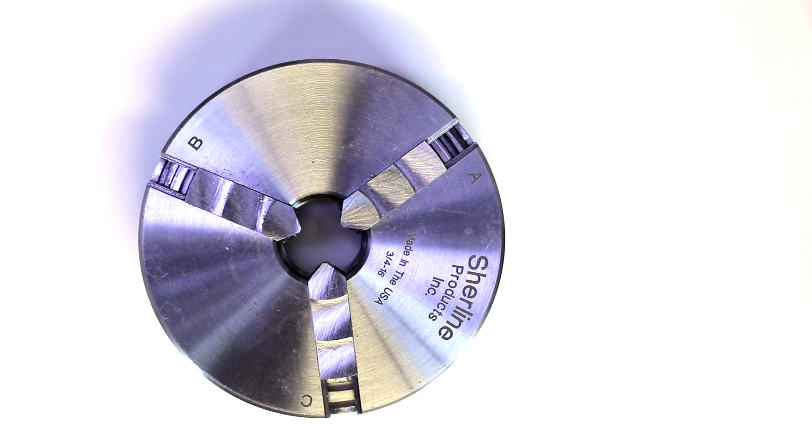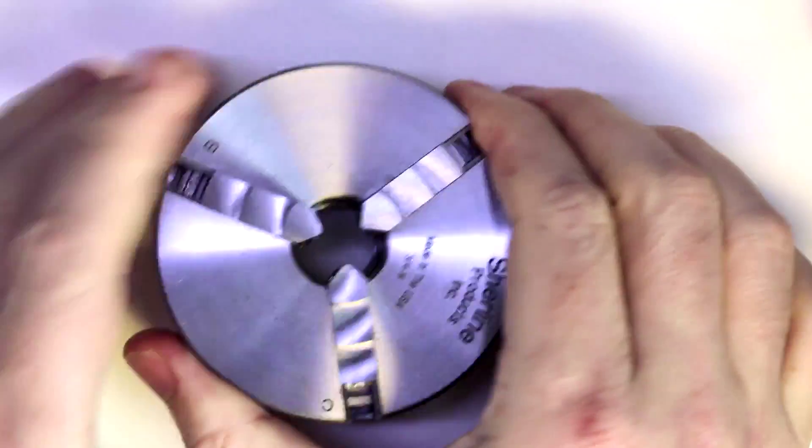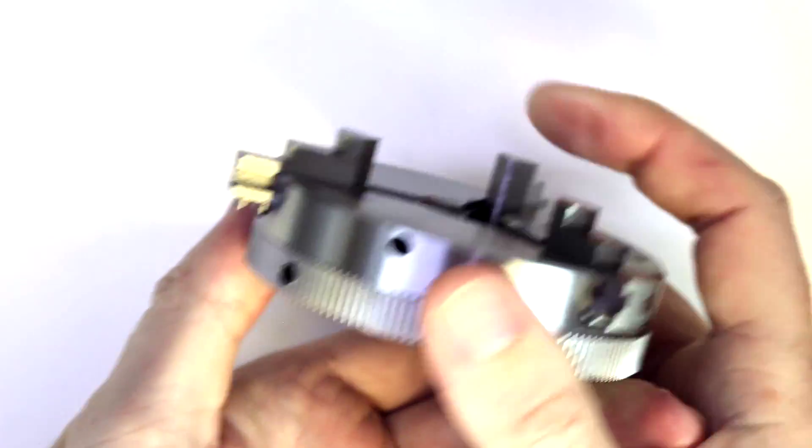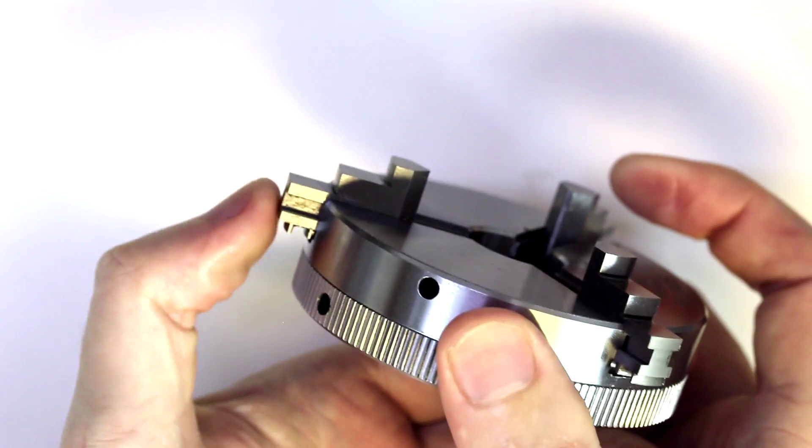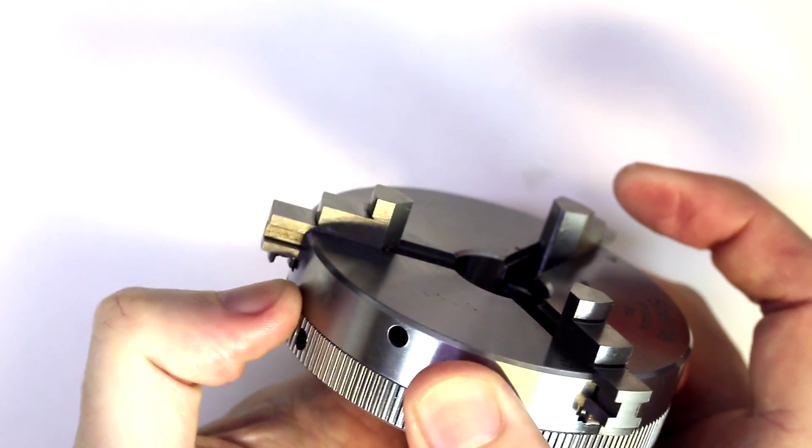Now with most three-jaw chucks, you'll have the option of replacing these jaws. So as you scroll this out, we'll start to see that the jaws extend to where their teeth are outside of the body of the chuck.